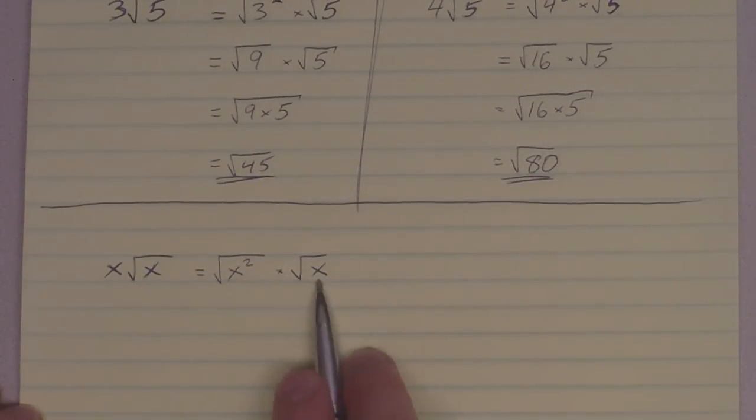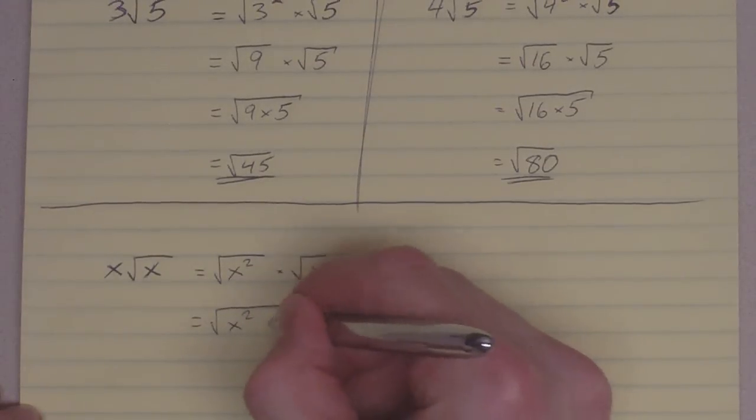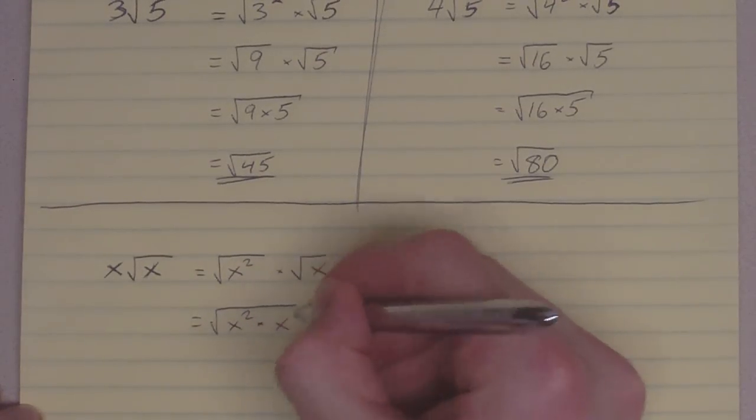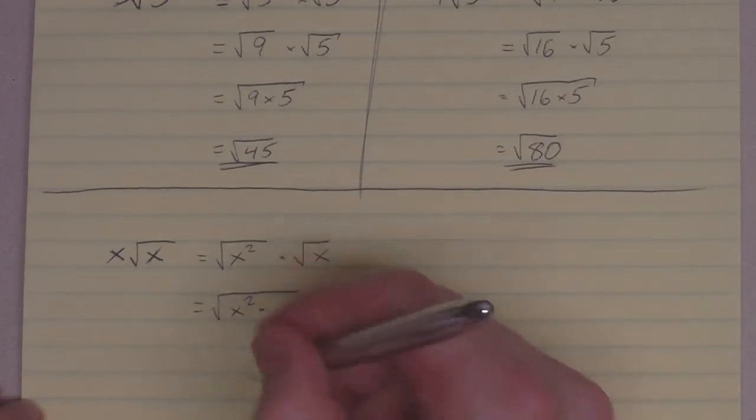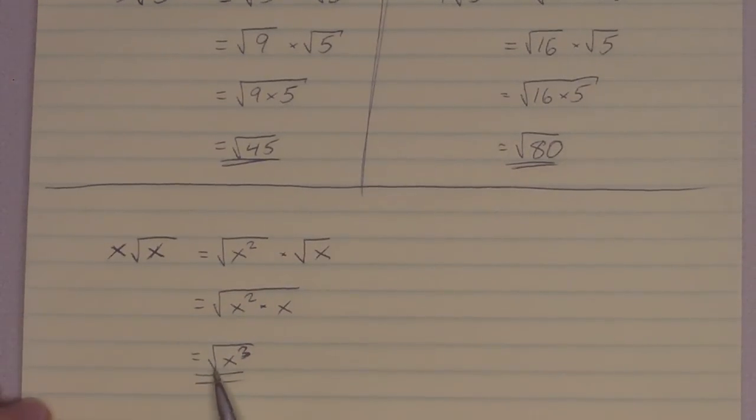Now I've got root x squared times root x, which I can combine under the same radical, root x squared times x. And x squared times x is x cubed, adding the exponents there. So x root x becomes root x cubed. That's how we convert mixed radicals into entire radical format.